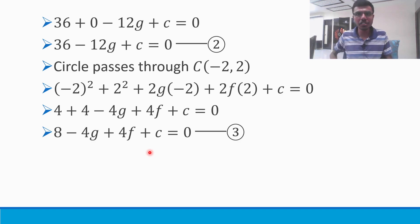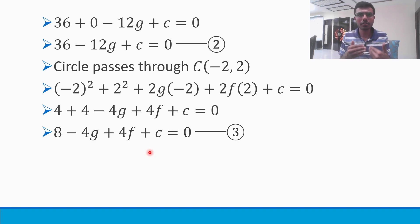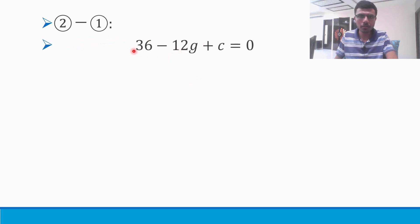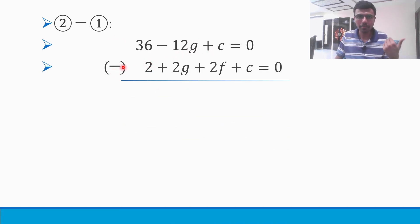Now I have three variables g, f, c and three equations. What I'm going to do is subtract equation 1 from equation 2 to eliminate c. We need to reduce the variables to find g, f and c — we cannot find them all in one shot. Let's do equation 2 minus equation 1. This was my equation 2 and this was my equation 1. I'm subtracting.